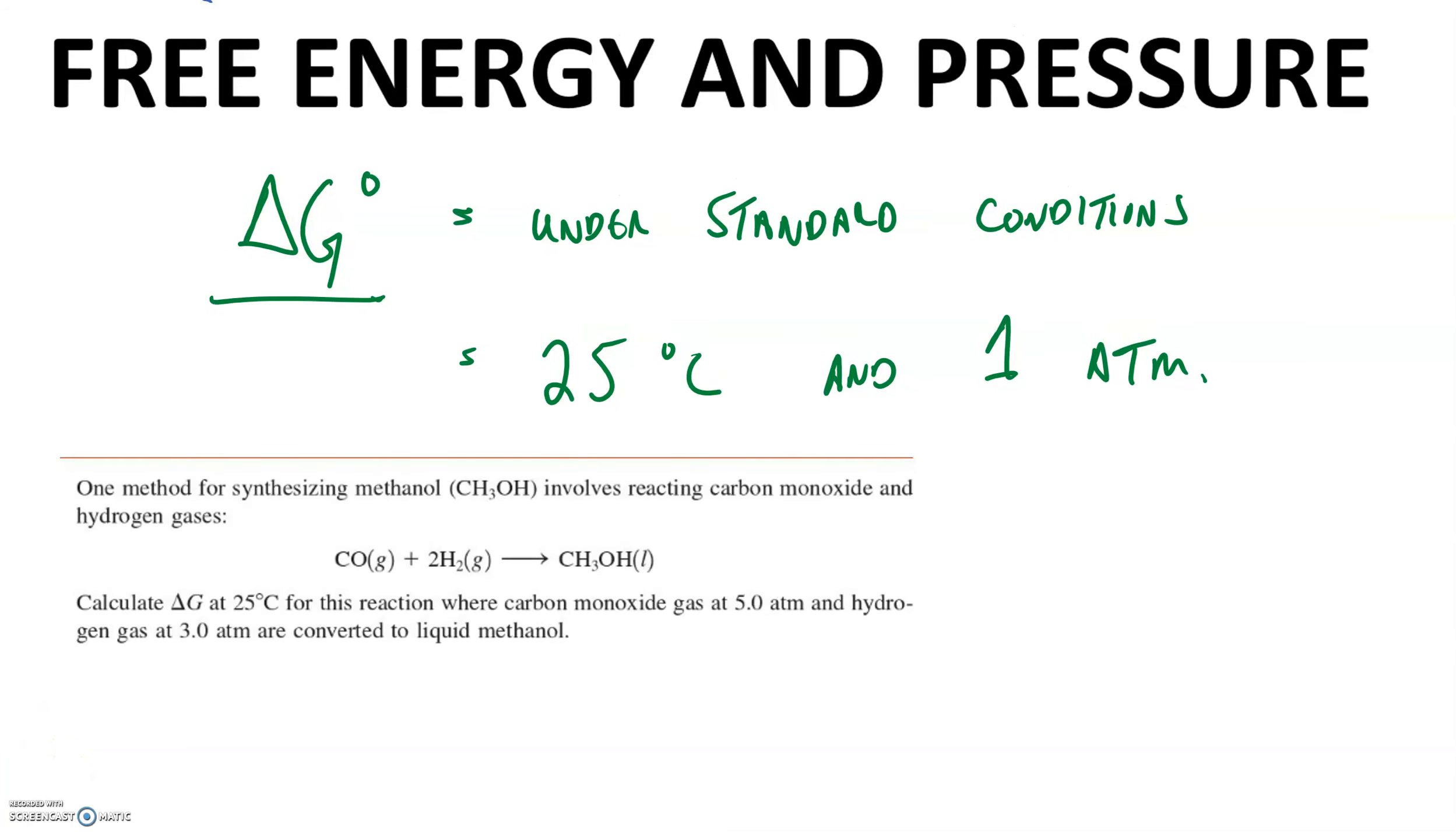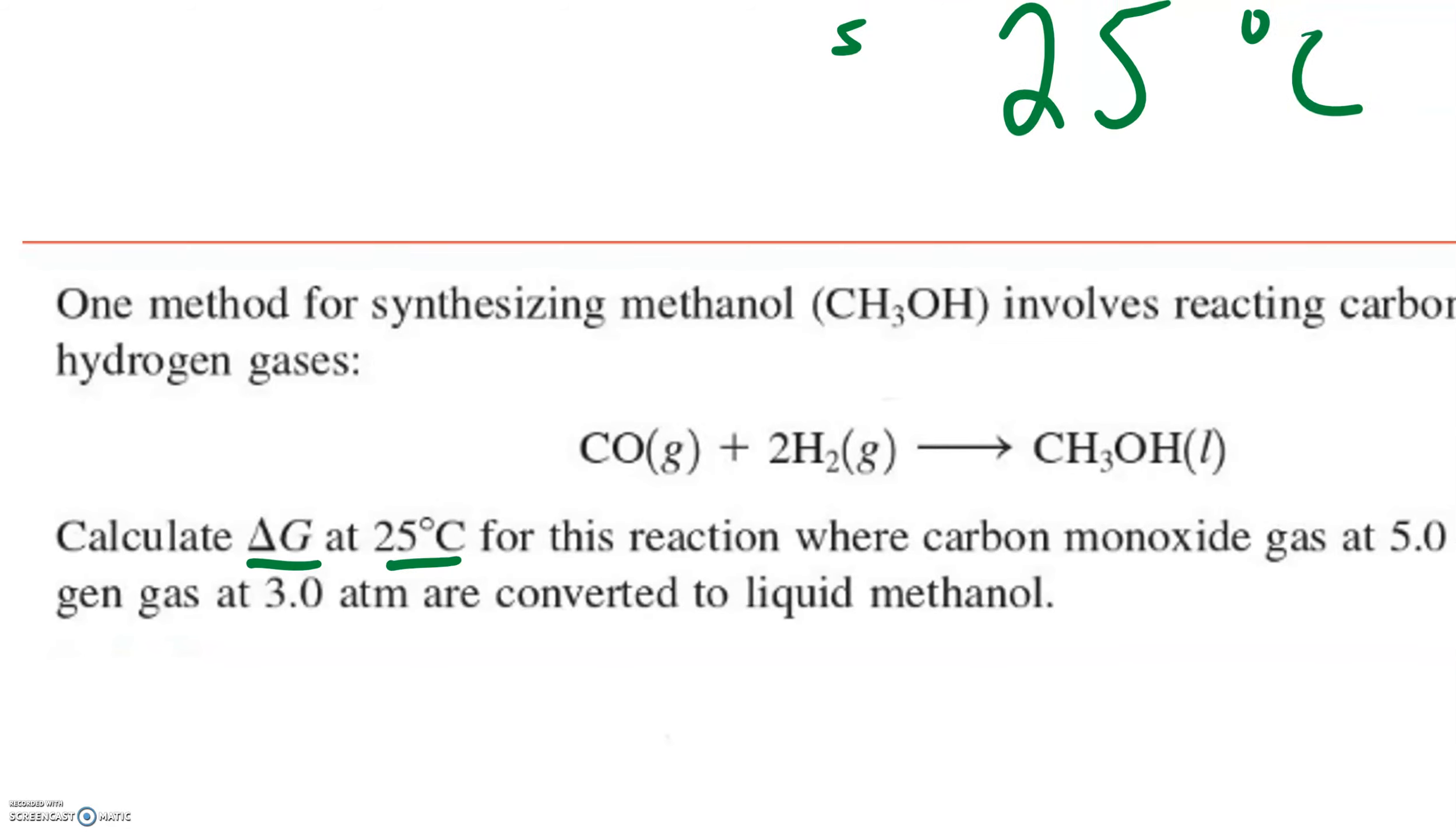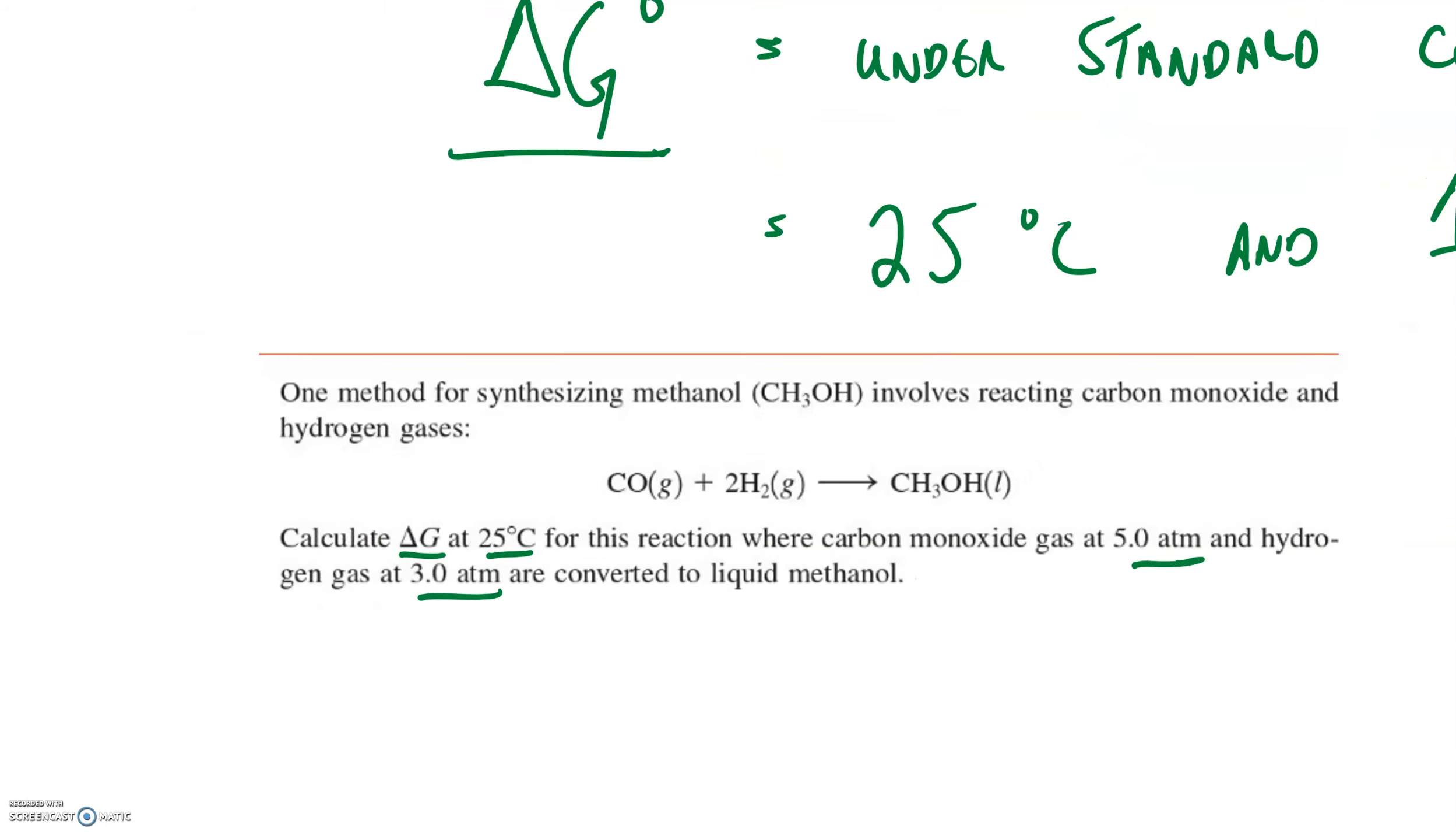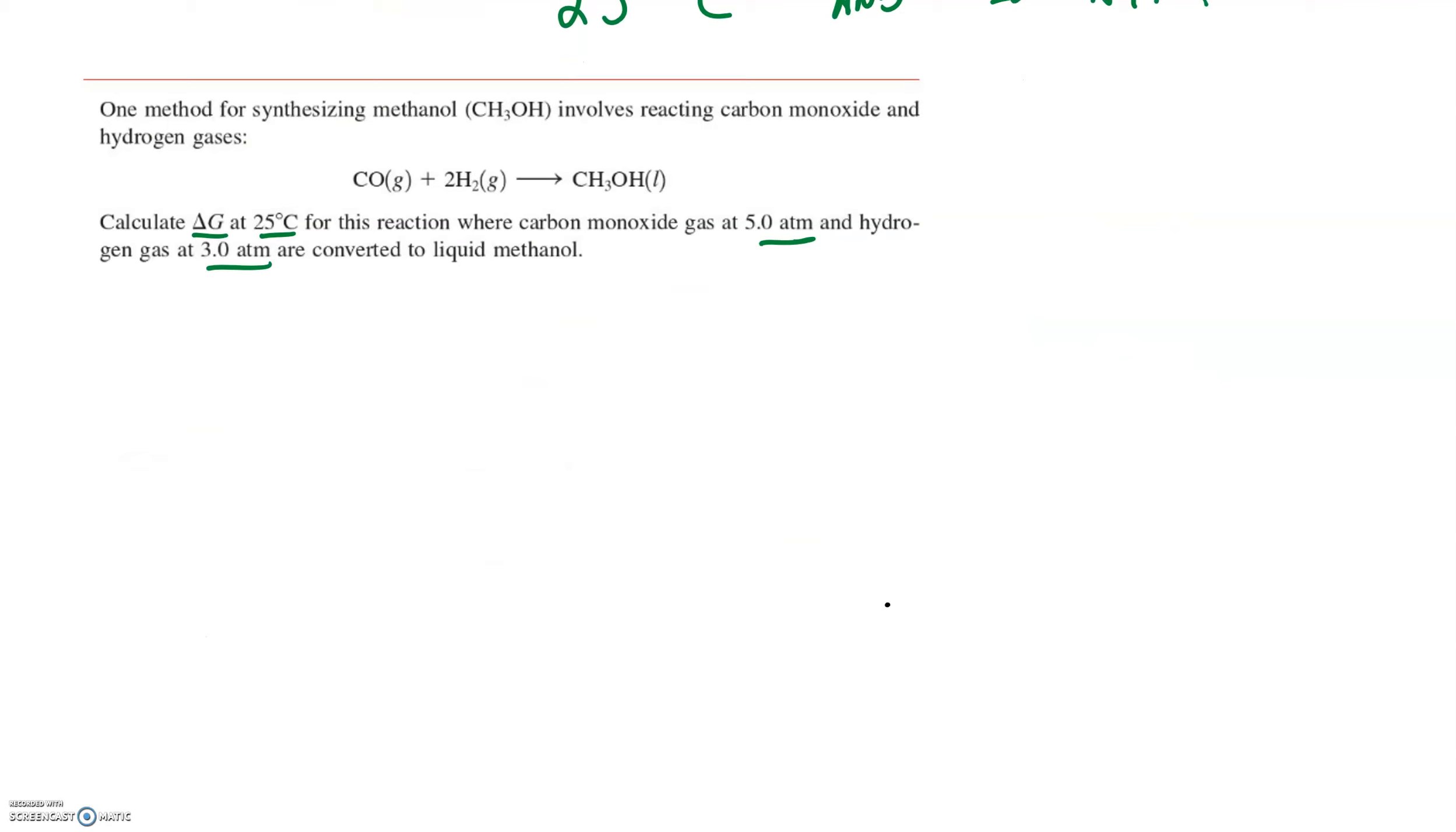Here is a reaction, and it's asking us to predict the spontaneity. Notice that the delta G doesn't have a degree sign after it anymore because we're no longer at standard conditions. We're at 25 degrees Celsius, but we're no longer at 1 atmosphere. We have two gases, two reactants that are gases, where their partial pressures are way different than 1 atmosphere. We're going to use a new equation to determine this change in spontaneity.